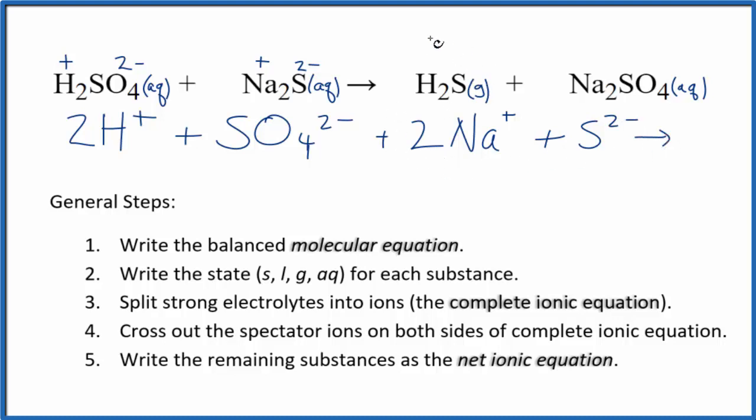For the products, this H2S here, because it's a gas, we don't split it apart. It'll just be H2S. If we said it was aqueous and dissolved, because it's a weak acid and a weak electrolyte, we wouldn't split the ions apart. We only do that for strong electrolytes. So either way, H2S would be what we'd have in our equation.